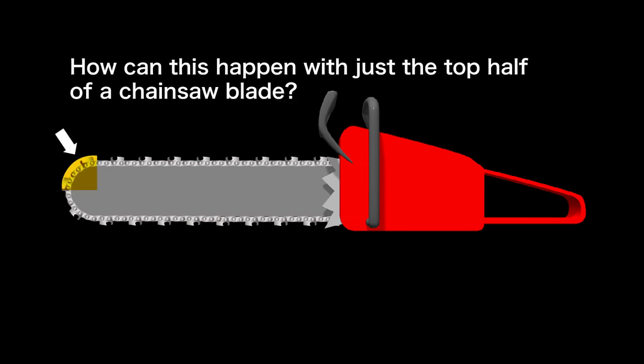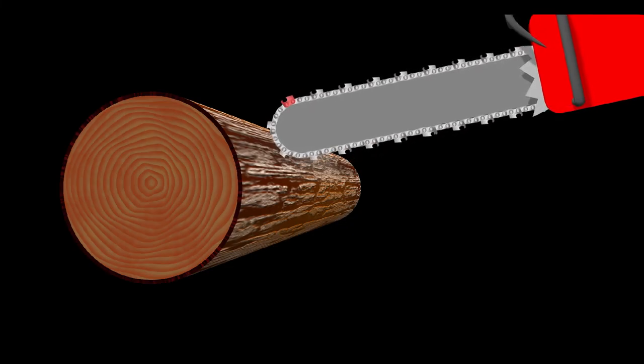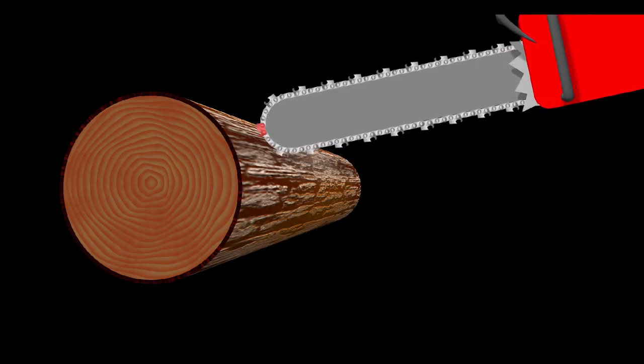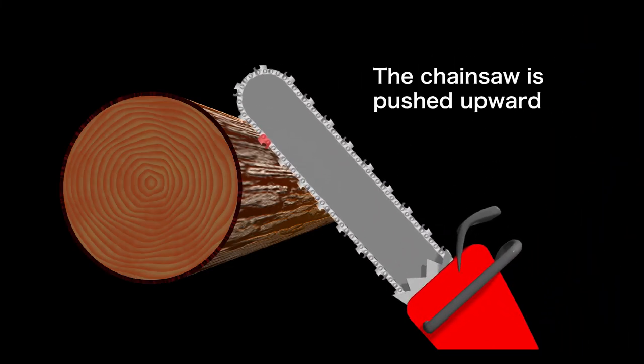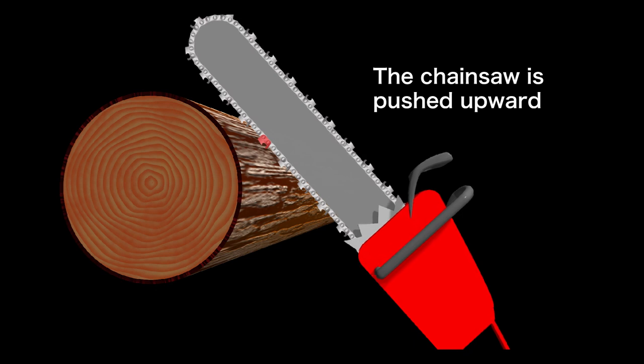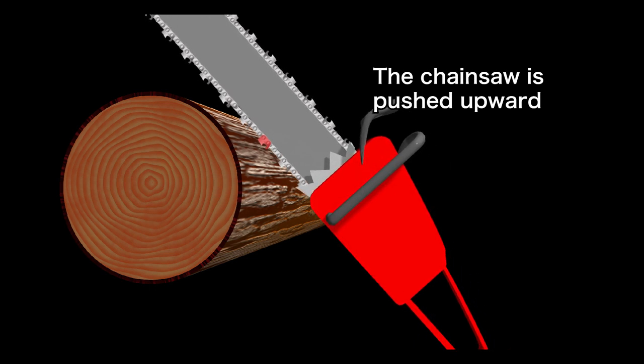So how can this happen with just the top half of the chainsaw tip? What would happen if the log hits the lower half? The rotational force is not strong and the movement is like being pushed upward.